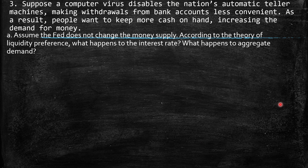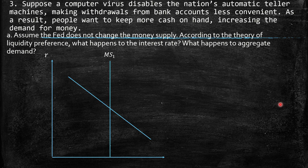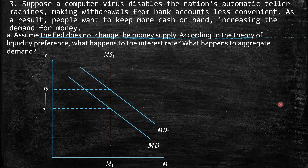Question 3: A computer virus disables the nation's ATMs, making withdrawals from bank accounts less convenient. As a result, people want to keep more cash on hand, increasing the demand for money. Assume the Fed does not change the money supply. According to the theory of liquidity preference, keeping bank accounts is less convenient, so better to keep cash — this is a shift to the right in money demand, giving us a higher interest rate at the same quantity of money.